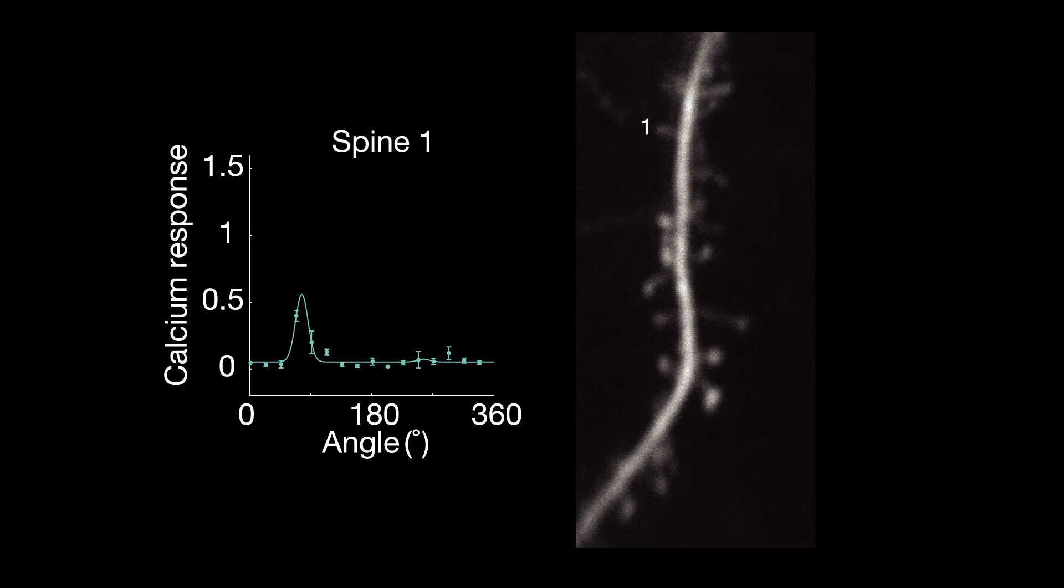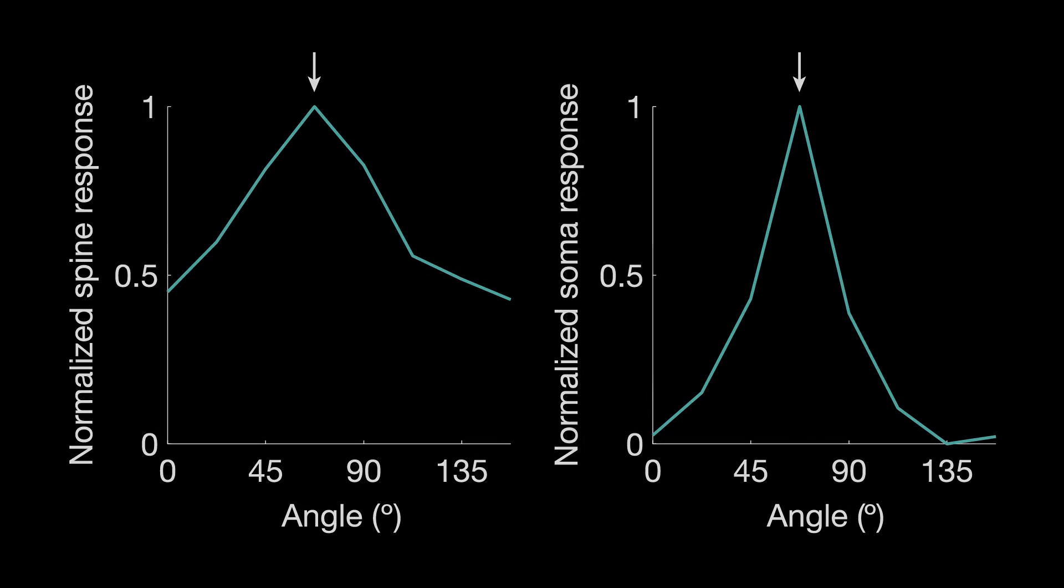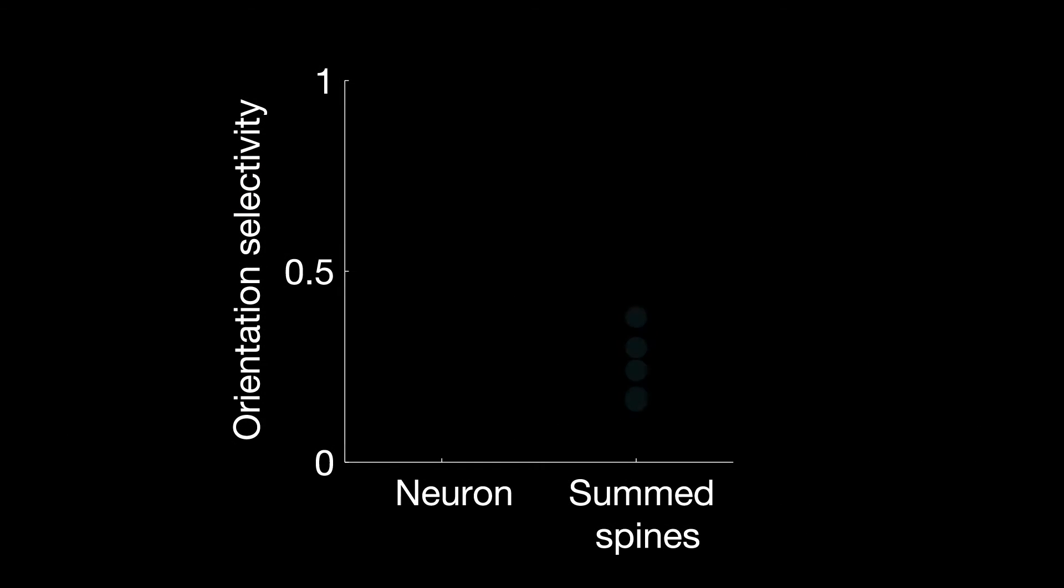Individual spines also preferred specific orientations, and the preferred orientation of all of a neuron's spines together reflected the neuron's overall preference. However, the selectivity of the inputs did not explain the selectivity of the neuron.